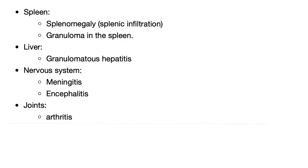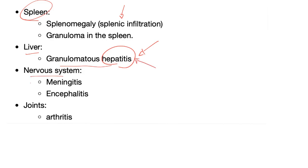Granulomas can infiltrate the spleen, leading to splenomegaly. In the liver, you can see granulomatous hepatitis — and the most common cause of non-infectious hepatitis in the United States is sarcoidosis. In the nervous system, you can see meningitis or encephalitis. In the joints, you can see arthritis.